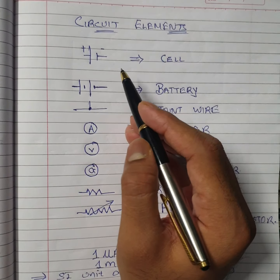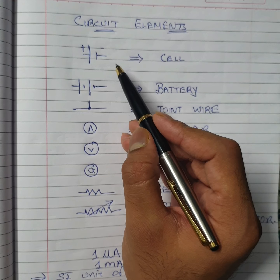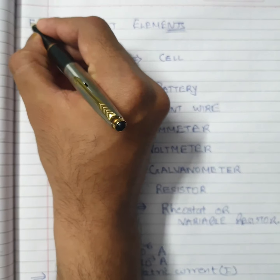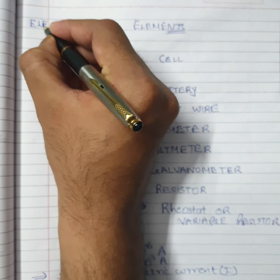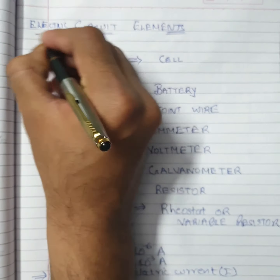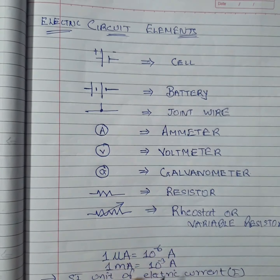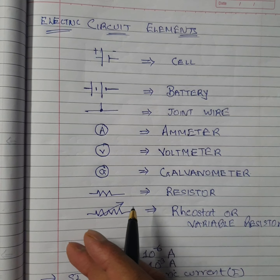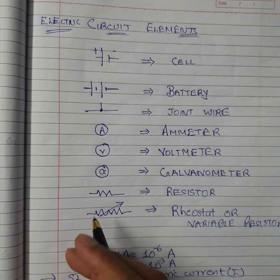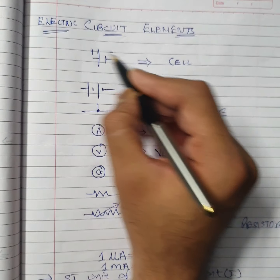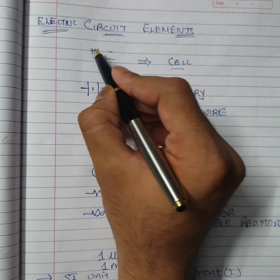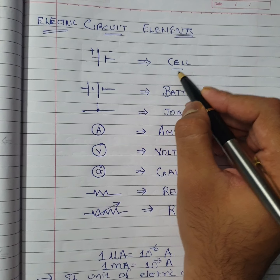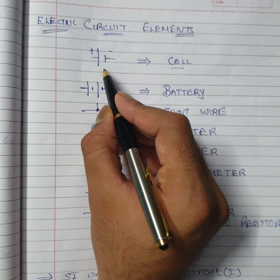Now, which elements constitute an electric circuit? There are many elements that make up an electric circuit or circuit schematic. The first element is the cell. A cell consists of two terminals — positive and negative. When a series of cells combine, they make a battery.